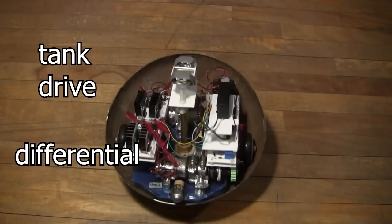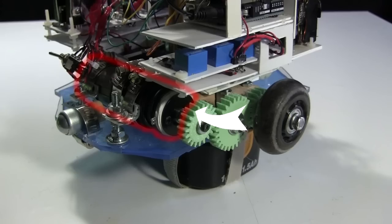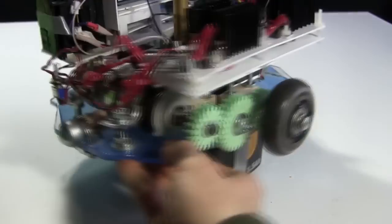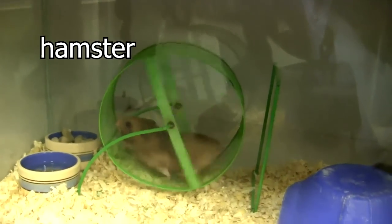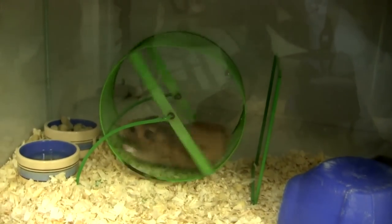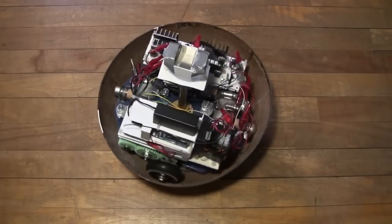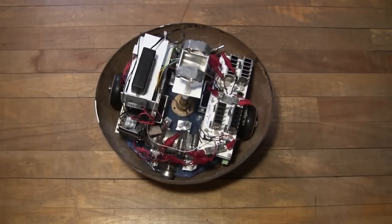This is a tank drive, also known as a differential drive. That means that the wheels each have their own motor. The drive system is also called a hamster. That's because it works like a hamster running in a hamster wheel, causing the hamster wheel to rotate. To turn, the motors are driven in opposite directions.